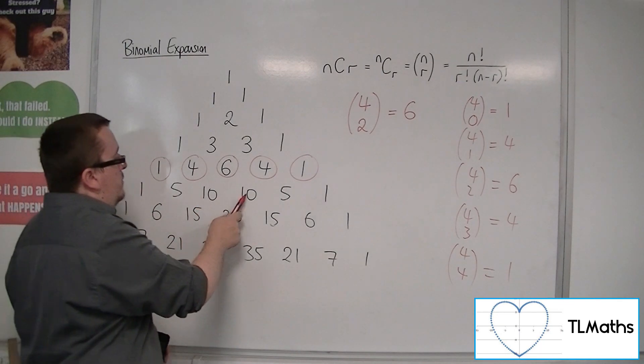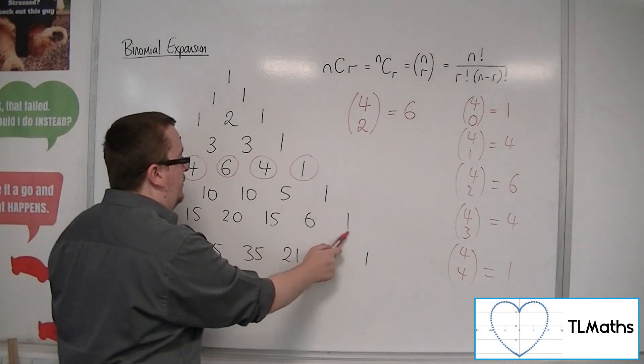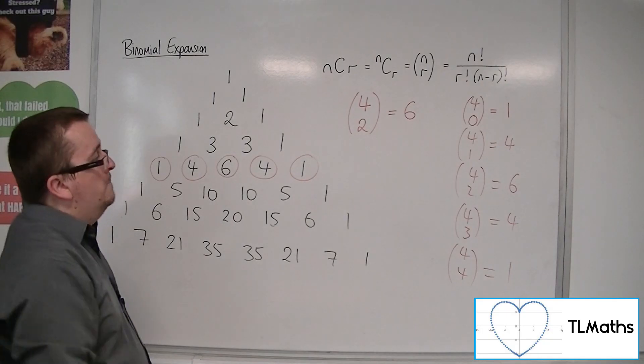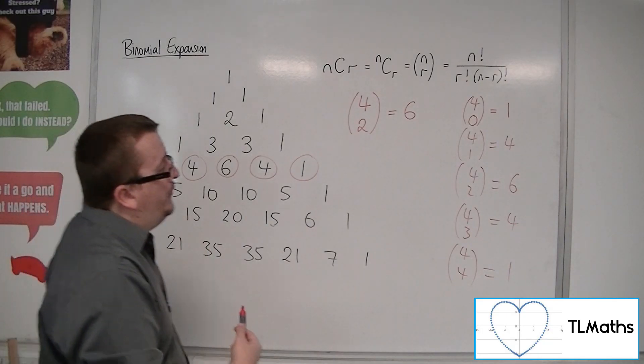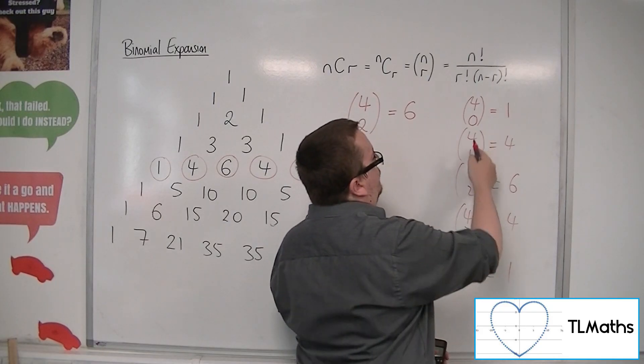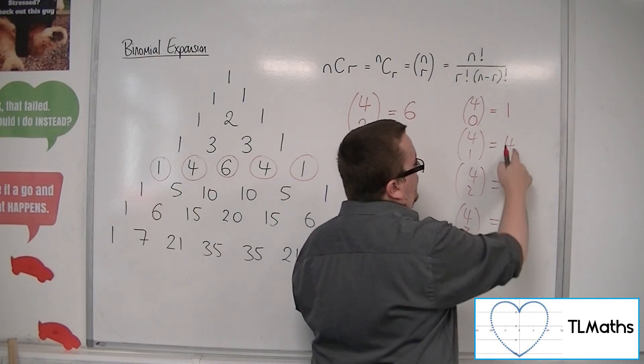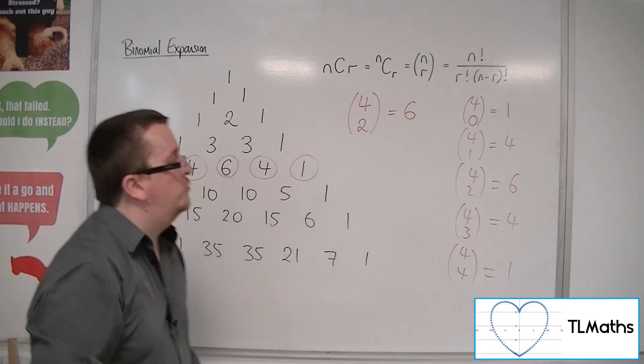0, 1, 2, 3, 4, 5, 6. You can also see the symmetry: 4 choose 3 equals 4 choose 1. You're 1 away from 0, 1 away from 4, and you get the same value.